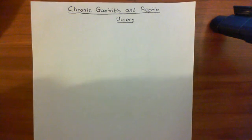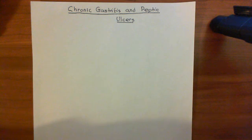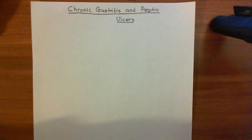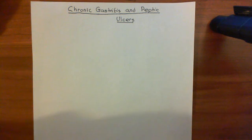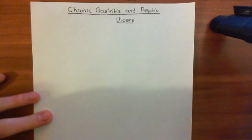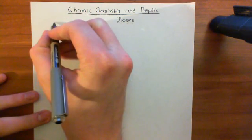Before we can discuss the pathology, we need to first understand the anatomy and the physiology. We're going to discuss the gross anatomy of the stomach, then the microanatomy and histology of the stomach wall. Then we'll talk about the physiology of gastric acid secretion and its regulation, then chronic gastritis due to infection by the bacterium Helicobacter pylori, how that leads to chronic ulceration of the stomach wall — a peptic ulcer — its complications, and finally the treatment of peptic ulcers.